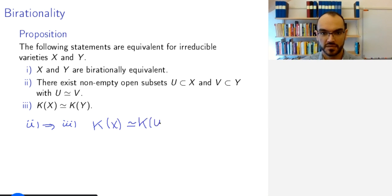is isomorphic to K(U) because U is dense in X, we have seen this, and because U and V are isomorphic, K(U) is going to be isomorphic to K(V) because the construction of K is functorial as we have seen, and because V is dense in Y this is just K(Y). In the reverse direction